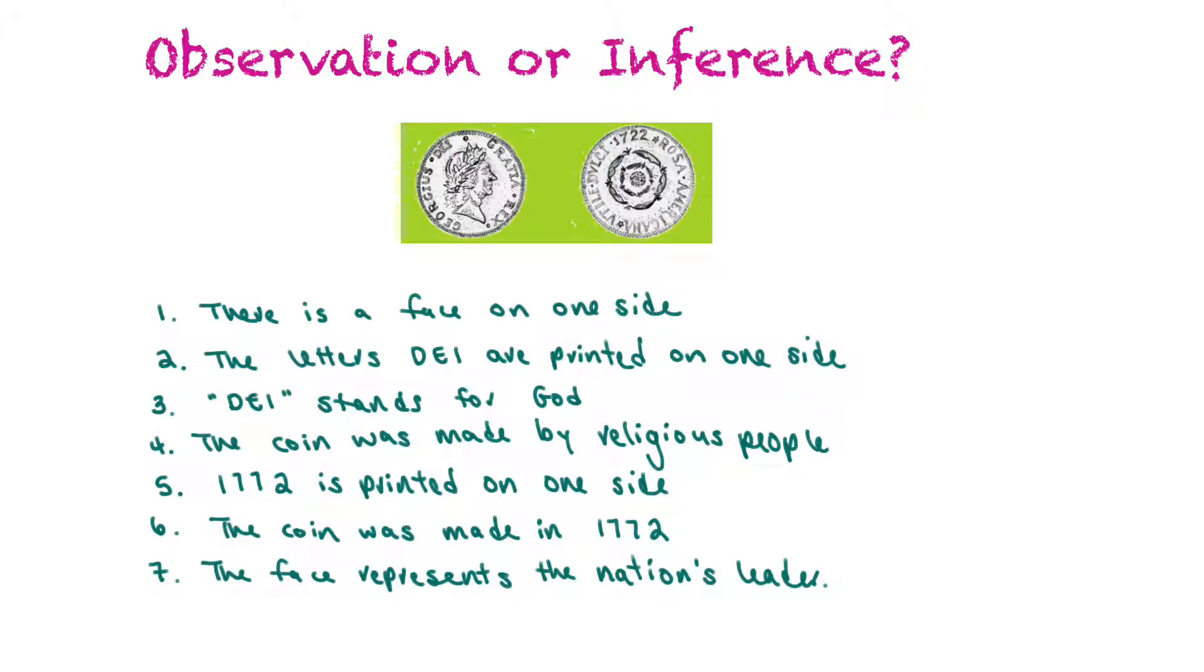Now we're going to practice identifying whether certain statements are observations or inferences, and we're going to use the image of this coin that's here at the top. We can see both the front and the back side of the coin, and there are seven statements about this coin, and we're going to identify whether each is an observation or an inference. Our first statement says there is a face on one side of the coin, so there's a depiction of a face, and that would be indeed an observation.